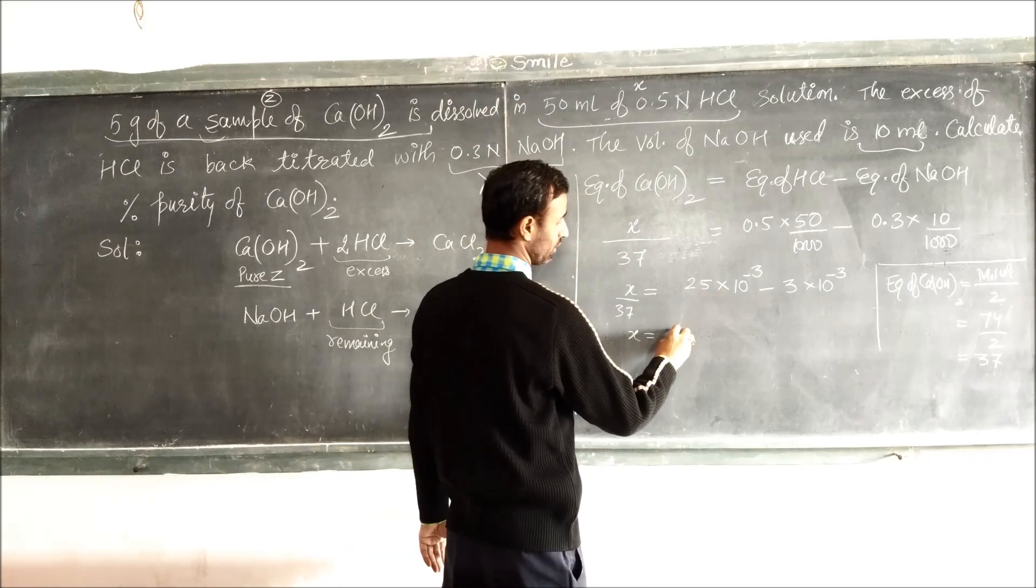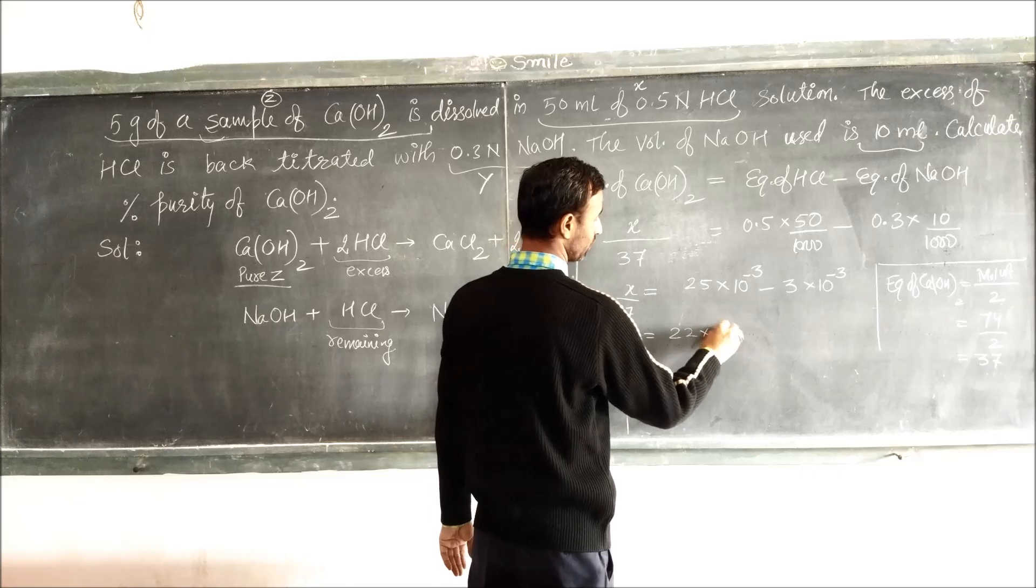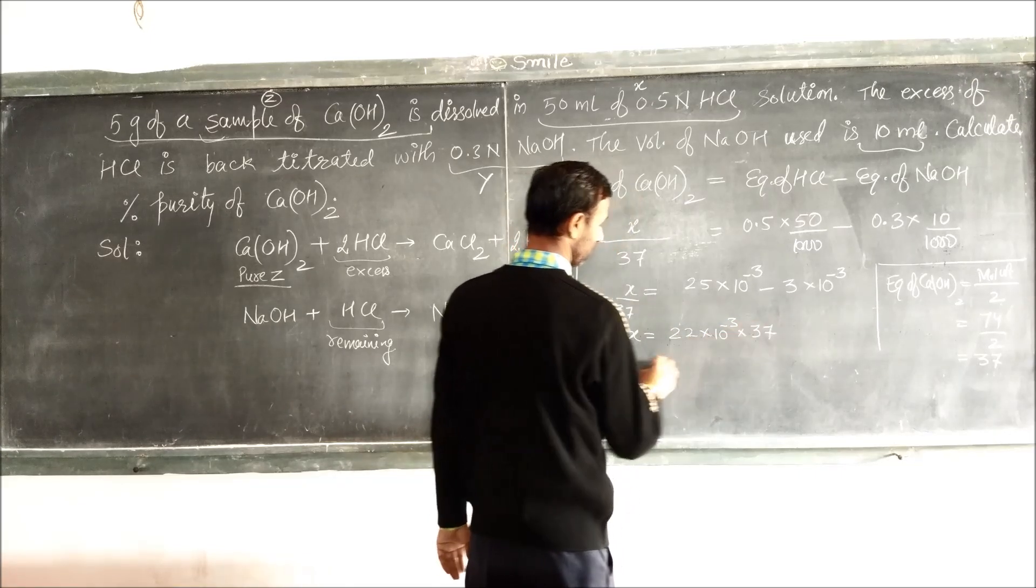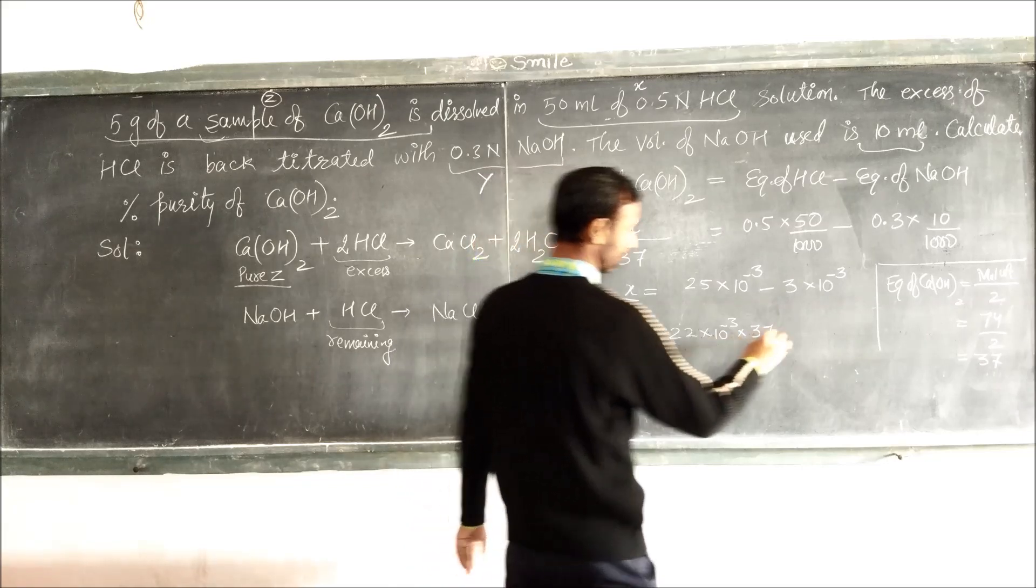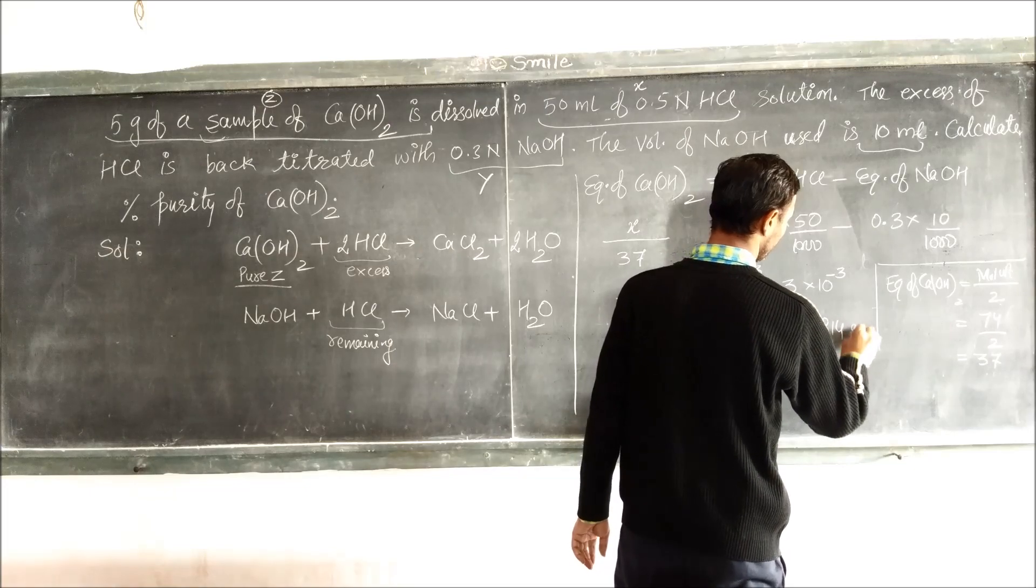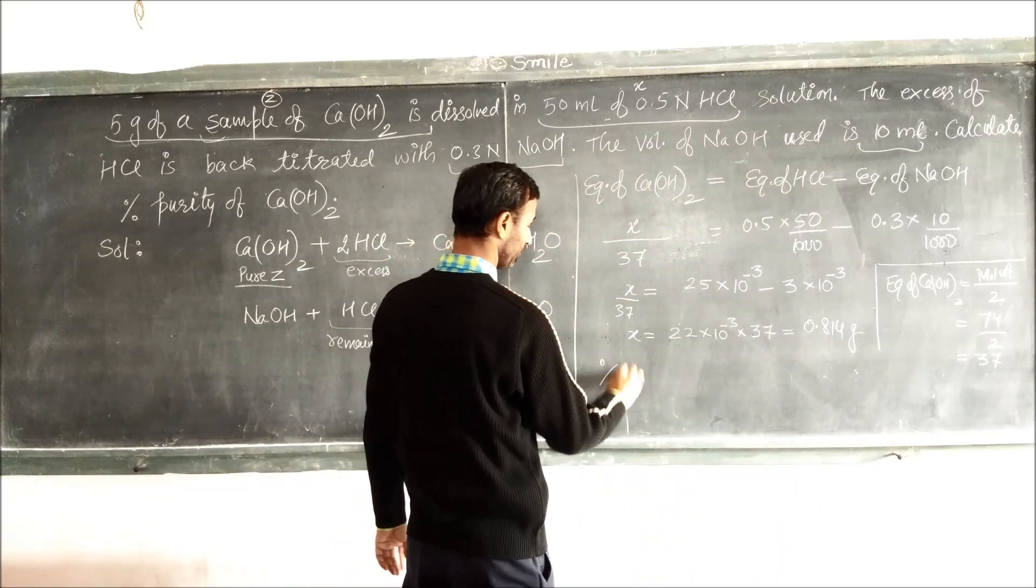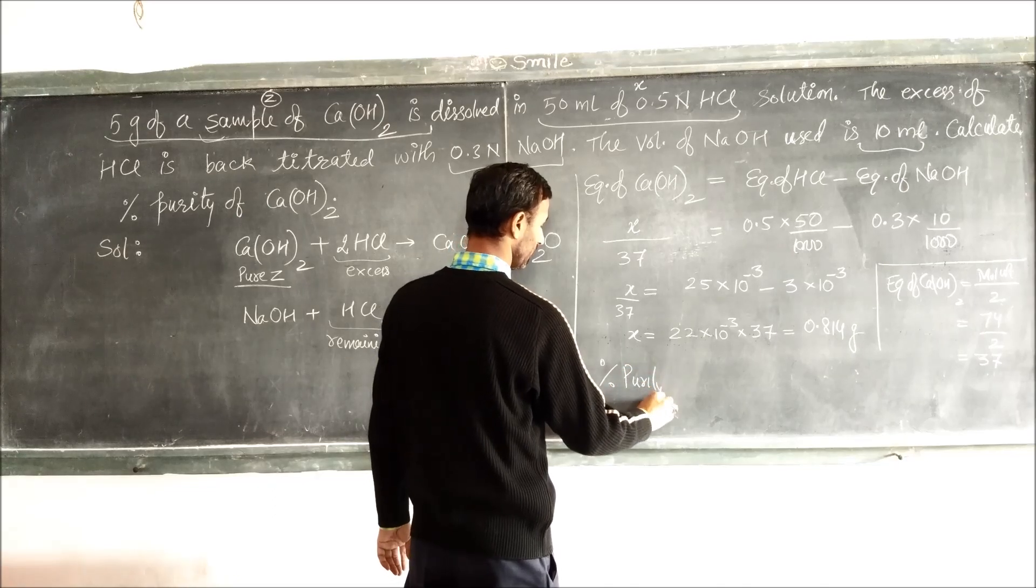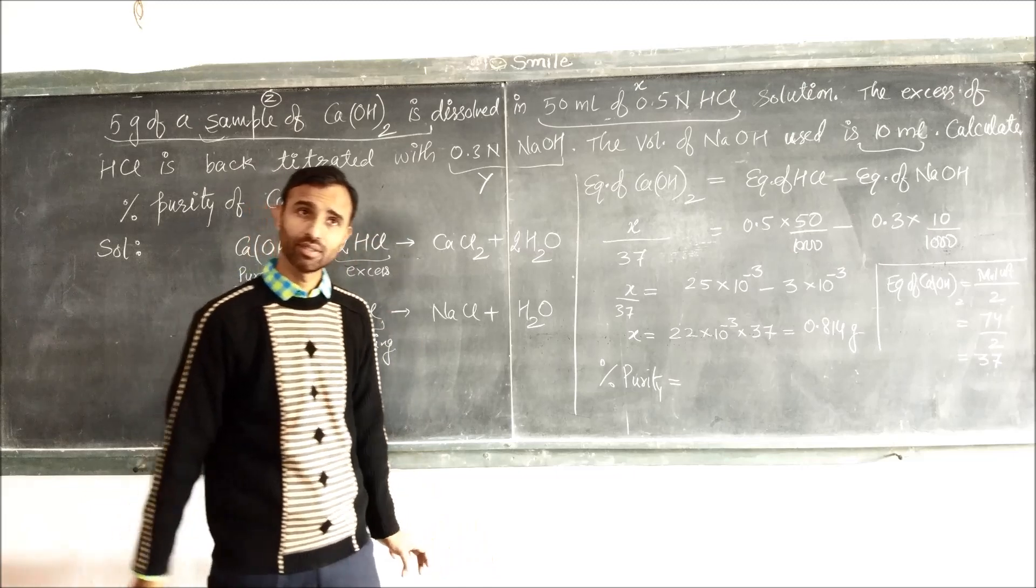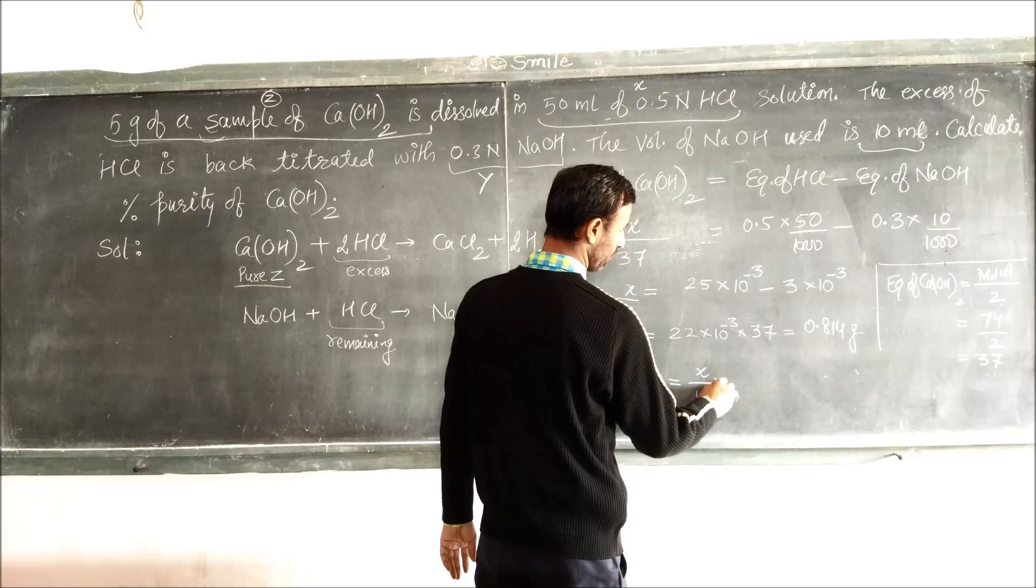So X equals 0.5 times 50 times 10 to the minus 3 minus 0.3 times 10 times 10 to the minus 3, X equals 22 times 10 to the minus 3 times 37, so it comes out to be 0.814 gram.